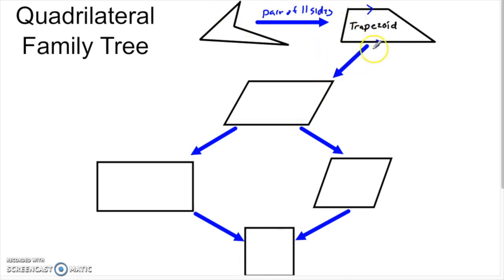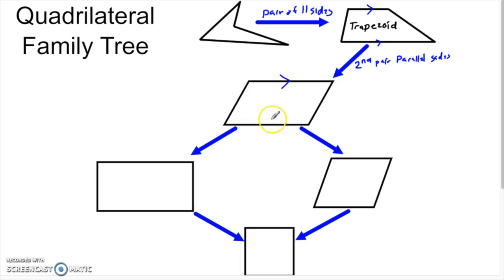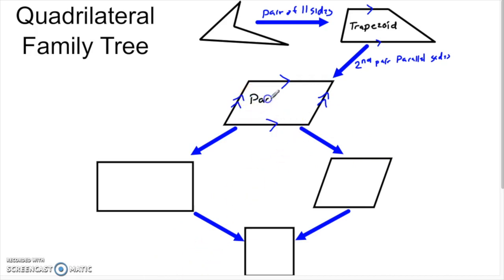Very quickly we're going to move from the trapezoid and impose another restriction: a second pair of parallel sides. We're saying we don't just want any quadrilateral with one pair of parallel sides — we want quadrilaterals with two pairs of parallel sides. If we impose that restriction, now we're talking about something called a parallelogram.